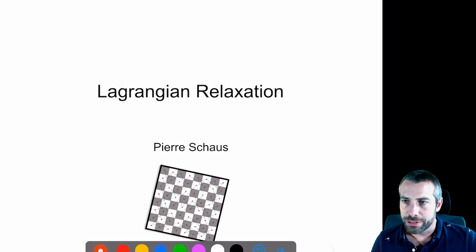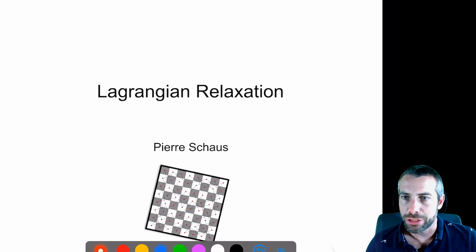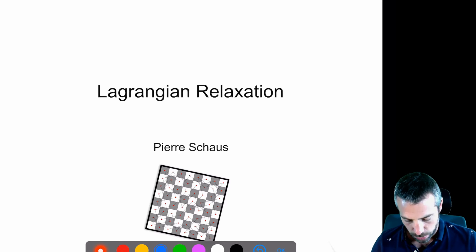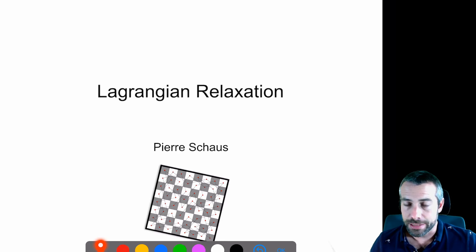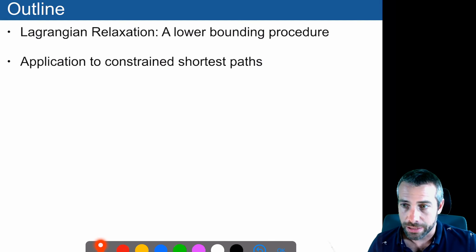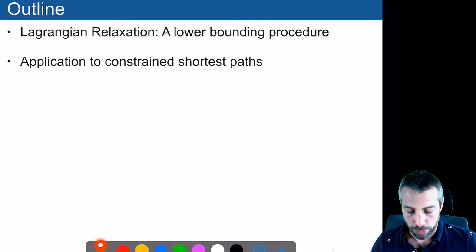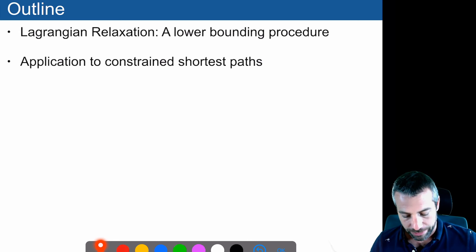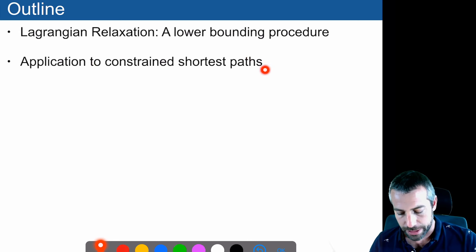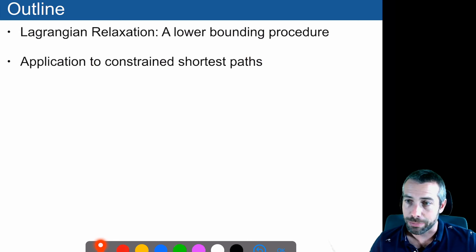Hello, today we will discuss another technique for finding a good lower bound to a minimization problem, which is called Lagrangian relaxation. You can view this technique as an alternative to linear programming, and we will apply it to a specific problem: the constrained shortest path problem, which I will explain now.